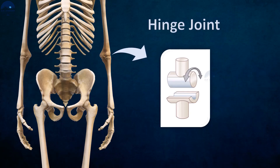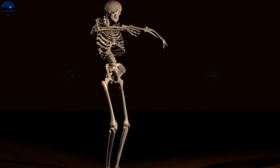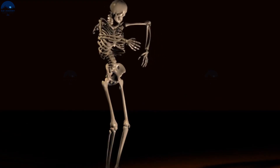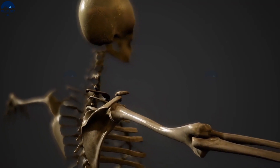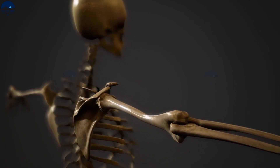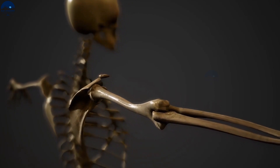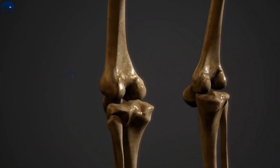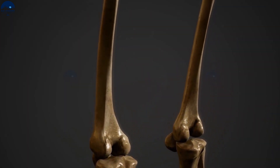Hinge joint: This joint allows movement in one direction only, which is up and down or backward and forward, like the hinges of a door. Examples include the elbow joint and the knee joint.